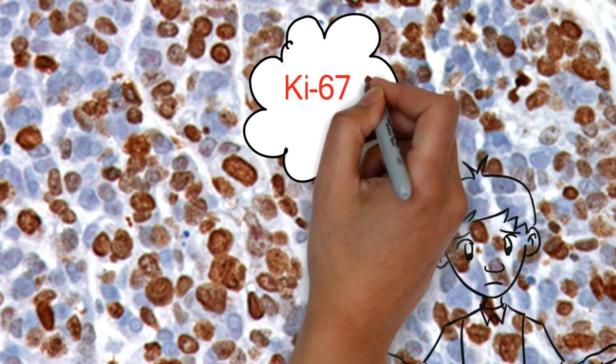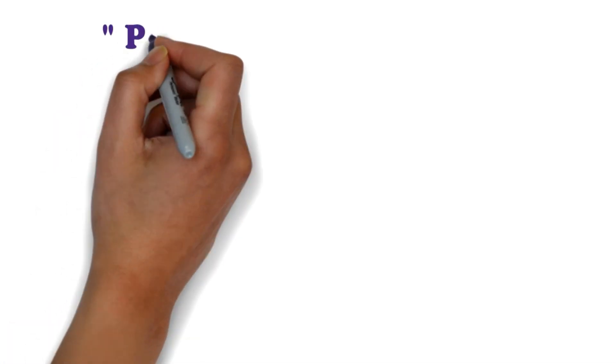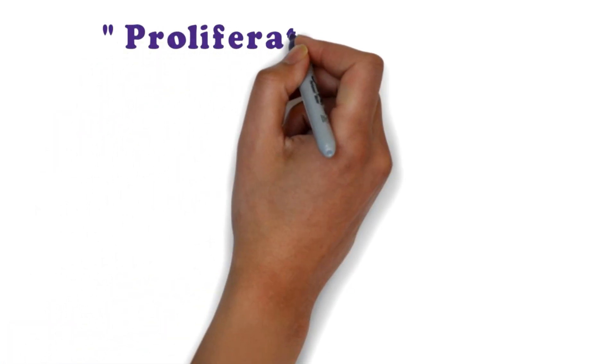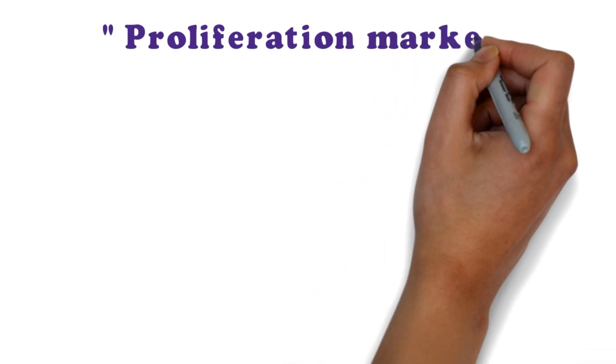Hello friends, you are watching Pathology Discussion Forum. In the last video we discussed about the Philadelphia chromosome — if you haven't seen it, you can click on the link at the end of this video. Today I will discuss about ki-67. If you haven't subscribed to our channel, you can press the subscribe button below. So, what is ki-67? Ki-67 is widely used in routine pathological investigations as a proliferation marker.